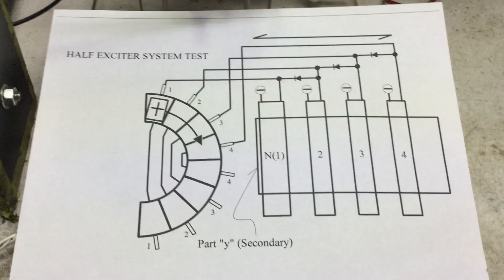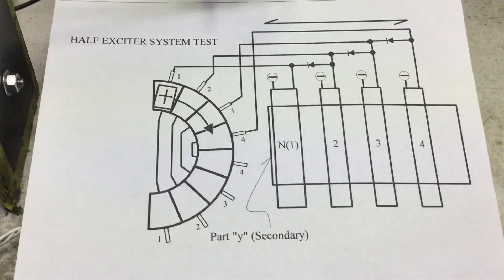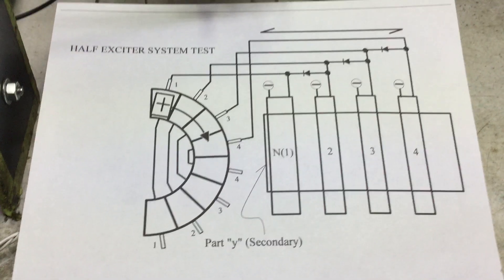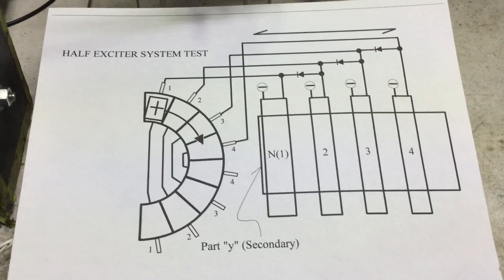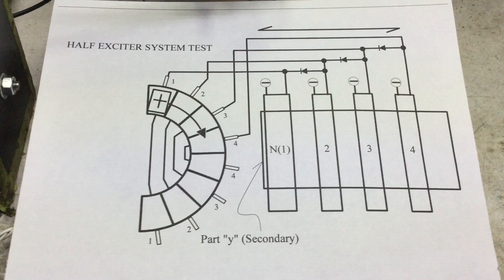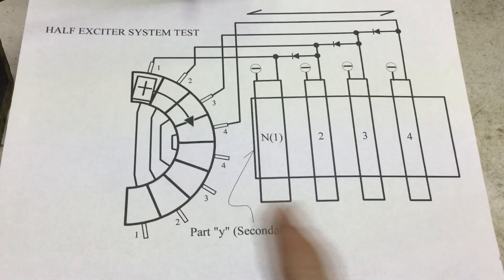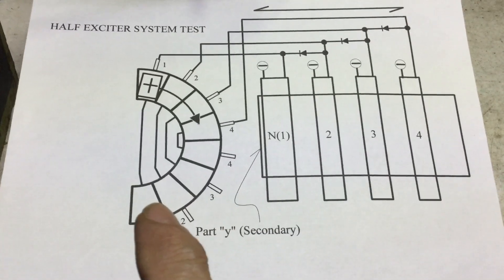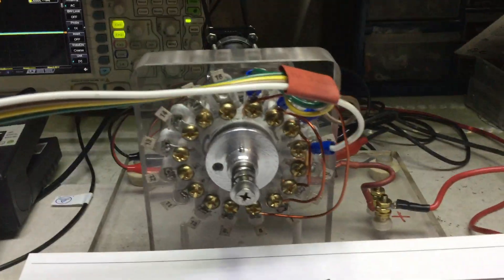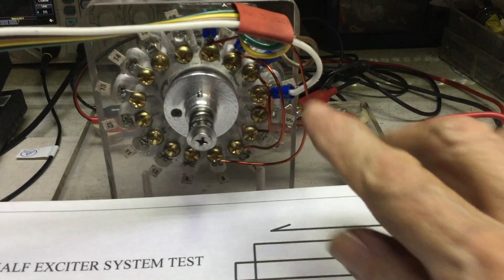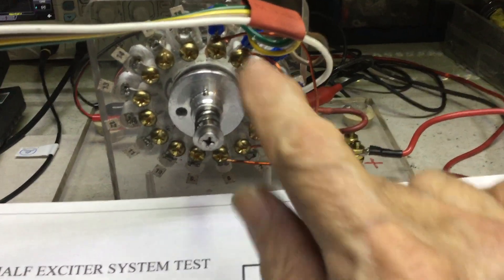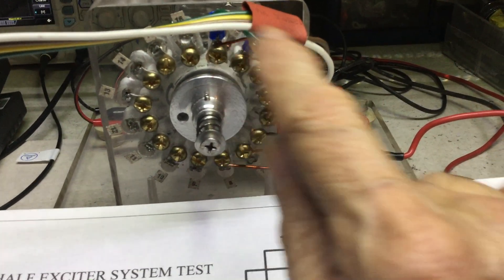Alright guys, here's a halfway test of half the exciter system. Only four coils are being tested, connected to half the commutator. If you look in here, I have the bridges the same way with one, three, four - only four cables that run to the four coils.